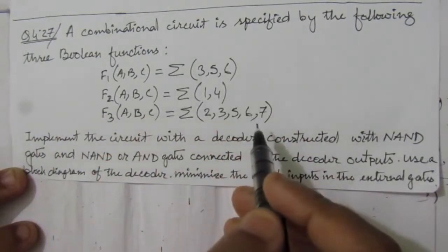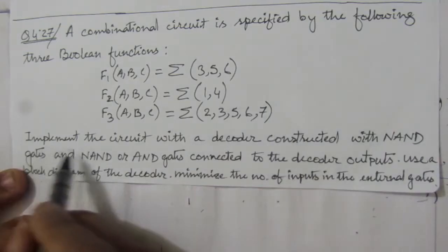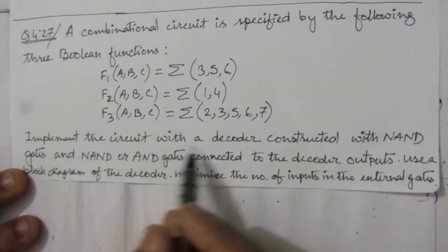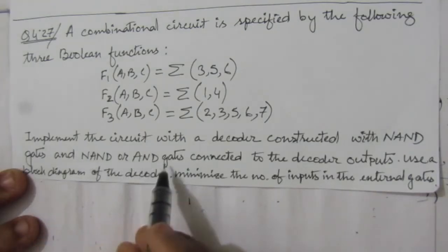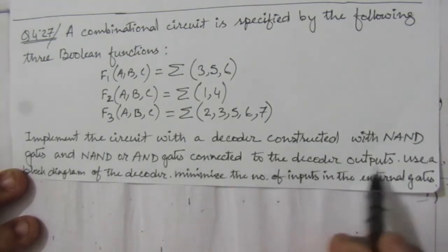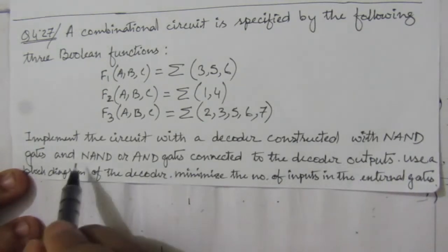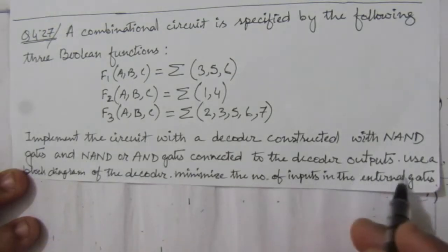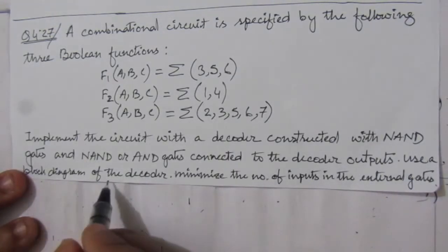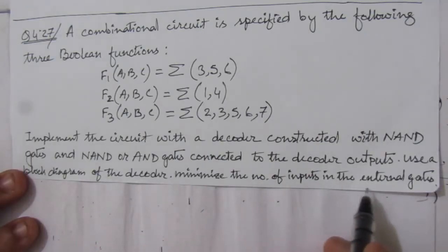The problem states: a combinational circuit is specified by the following three Boolean functions given in sum of minterms expressions. We have to implement the circuit with a decoder constructed with NAND gates, and NAND or AND gates connected to the decoder outputs. We also need to use a block diagram of the decoder and minimize the number of inputs in the external gates.